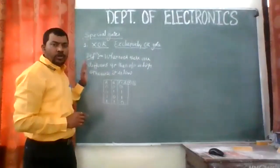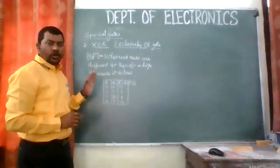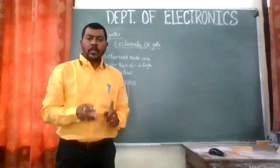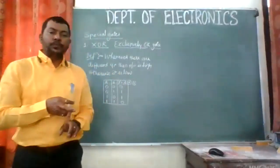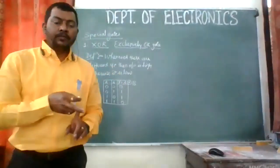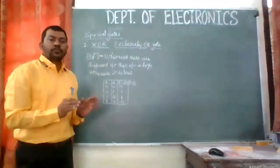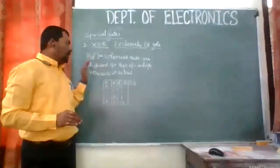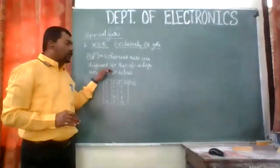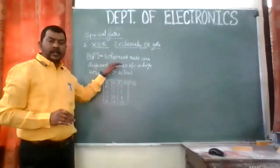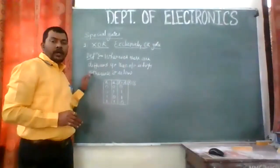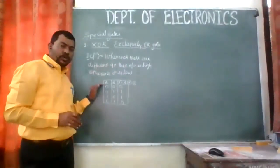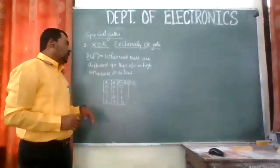This is the basic definition of XOR. Repeating it: for different inputs, the output is high; and for same inputs, the output is low. Whenever there are different inputs to a gate, the output is high; otherwise it is low.